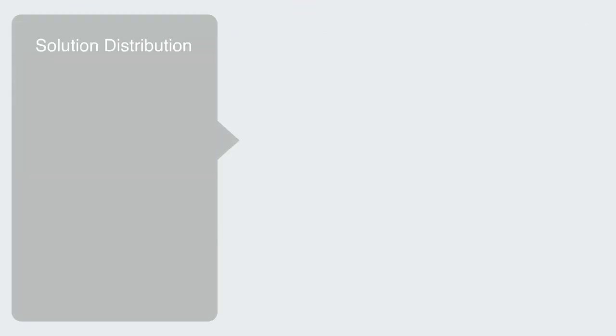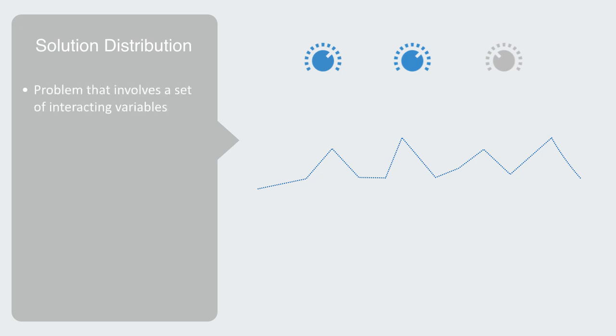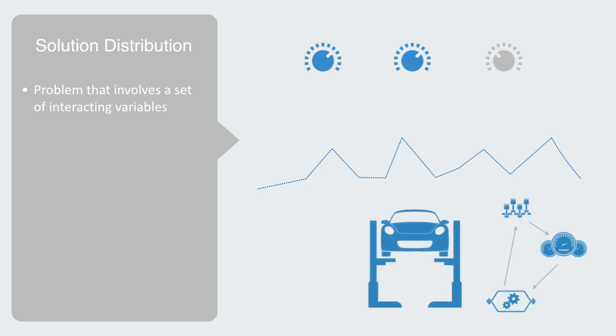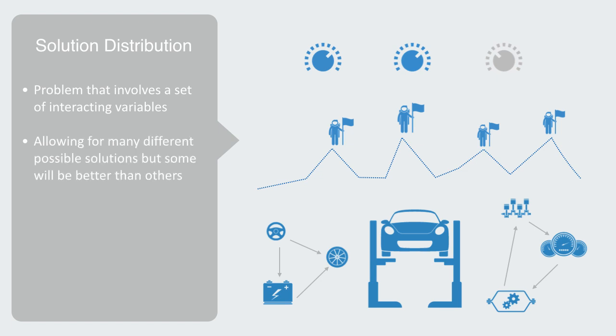Next, we will turn up the distribution of solutions. Here, the topology will develop many local peaks of varying height. This landscape corresponds to a problem that involves a set of interacting variables. There are many different variables and different combinations between them, giving us lots of different possible solutions. Designing a car would be an example of this. We might want it to be fast and low cost, but if we put a bigger engine in it to make it go faster, this would require a stronger chassis, which would add to the cost, and there would be of course many more interacting factors involved, allowing for many different possible solutions, but some would still be better than others.